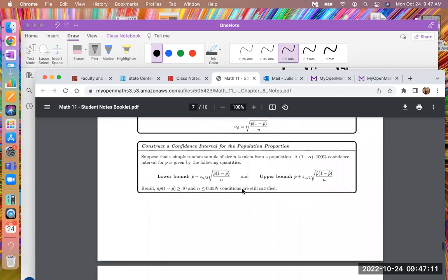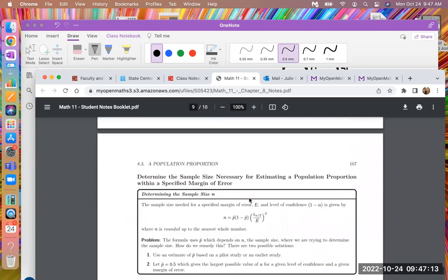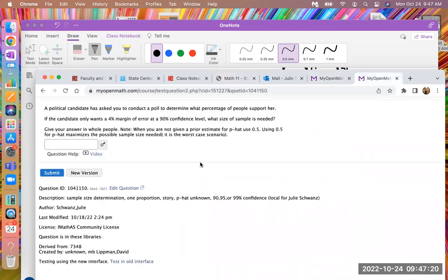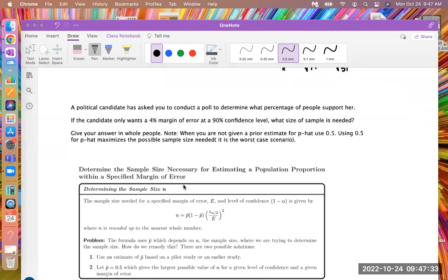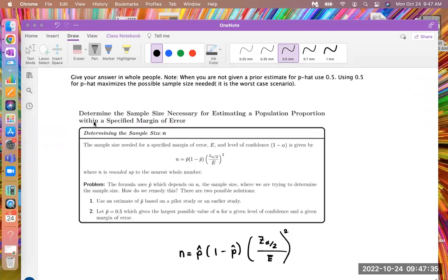So there's the lower and upper bound, and here is a formula for your sample size. So this is the one that we're going to be using today, because this problem is a proportion problem, because it's asking you what percentage or what proportion of the people will support her. So this is the equation that we're going to want to use. To determine the sample size necessary for estimated population proportion within a specified margin of error.